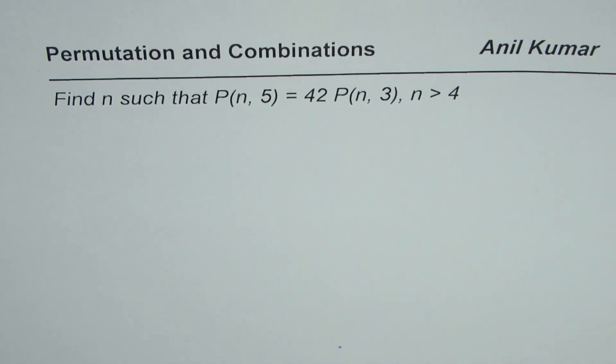I'm Anil Kumar and in this video we are going to explore the basic formula of permutations. The question here is find n such that P(n,5) equals 42 P(n,3) where n is greater than 4.